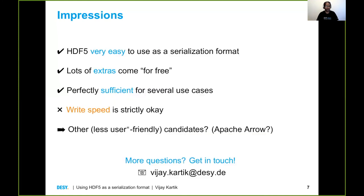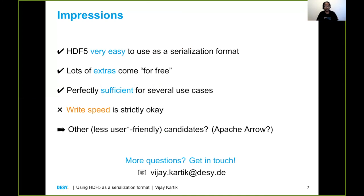To recap: using HDF5 as a serialization format — or sort of misusing it — it's extremely easy to use. Usability-wise I was very happy, and a lot of features come just for free, particularly compression. I think it's perfectly serviceable for many use cases, but for my use case of online, very high-rate data analysis, the speeds are just strictly okay. So I'm now looking at other candidates like Apache Arrow. I'm presenting this here because I'd also like to hear comments from others who may have tried these things. If you have more questions, please do get in touch — my email is at the bottom. Thank you.